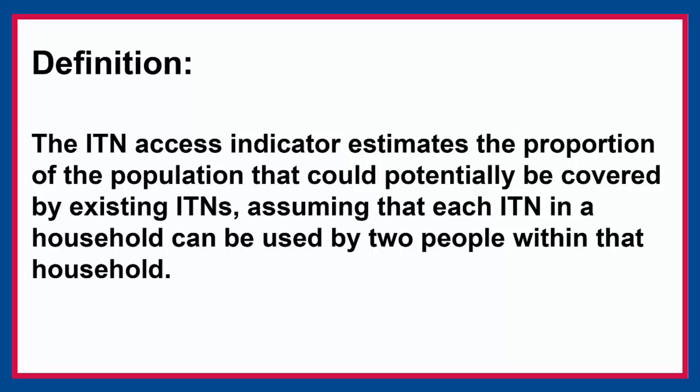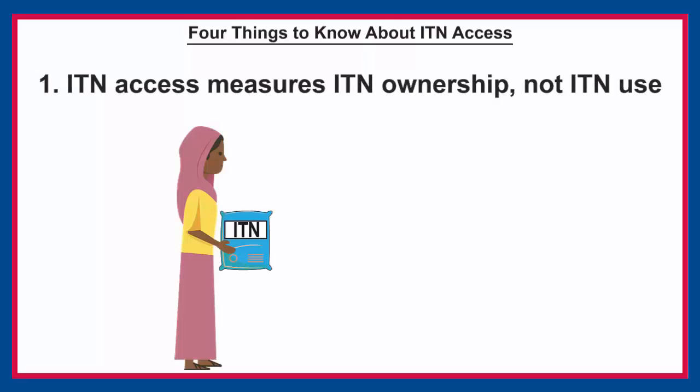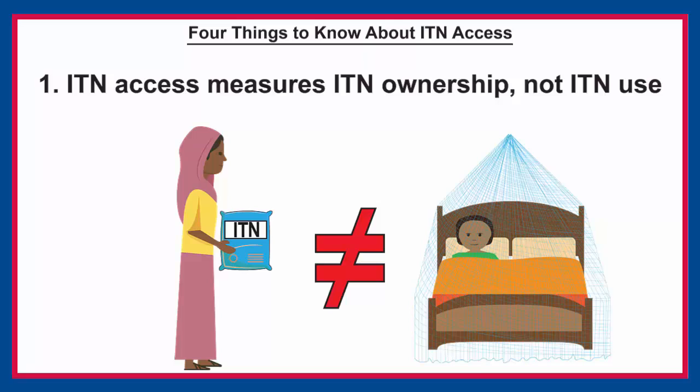There are four important things to know about ITN access. First, ITN access measures ITN ownership, not ITN use. This can be confusing because the indicator examines the proportion of the household population that could be protected by an ITN given the number of ITNs owned by the household. However, ITN access does not account for actual ITN use.